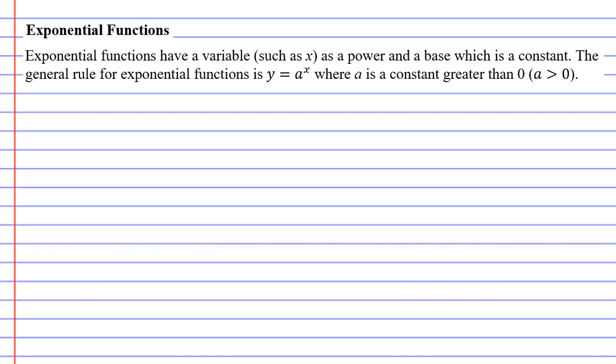So the general rule for exponential functions is y equals a to the power of x. Now a is our base and we just said before that the base is a constant. And then we have our power which is x and we said that the power is a variable such as x which is what we have here.